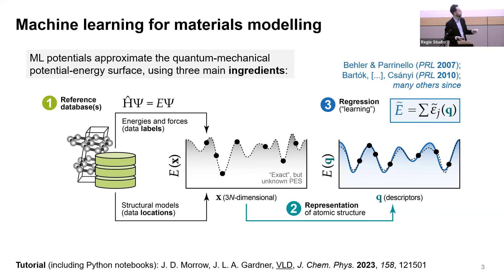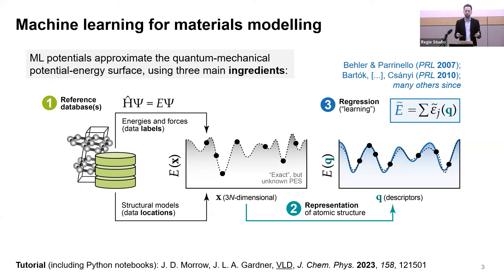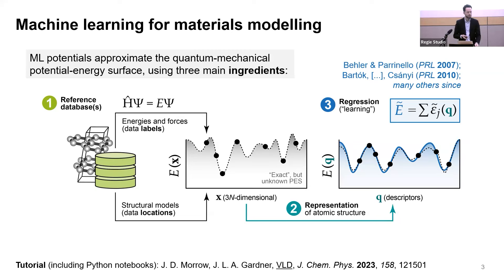There are two foundational papers: one from Jörg Behler and Michele Parrinello from 2007, and one from Albert Bartók and Gábor Csányi in Cambridge in 2010. Since then, there has been a rapidly growing community developing these tools. I want to advertise a tutorial paper we wrote with two of my PhD students, where we talk not just about how these things work, but also how to validate them — how to make sure they're accurate and reliable, which is a big challenge in machine learning methods.